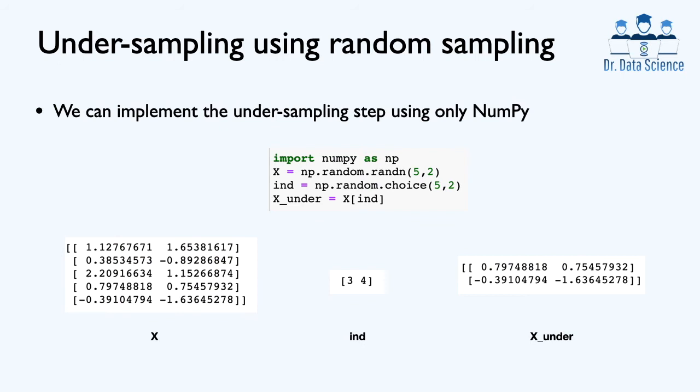For implementing random undersampling, we can skip the ImbalancedLearn package and simply use NumPy. To see this procedure, we create a random matrix X containing five rows, each with two attributes or features in the columns. Next, we use random.choice where the goal is to randomly pick two numbers out of 0 to 4 — remember that indexing starts from 0 and the endpoint is excluded. We then pass this random array to subset the rows of X, giving us two rows of the matrix X because the integer array has values three and four.